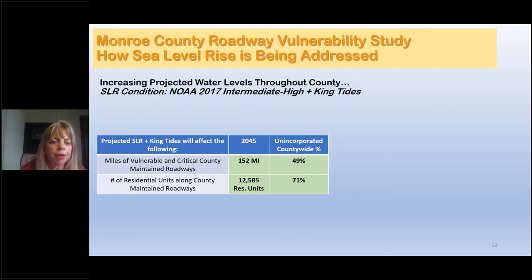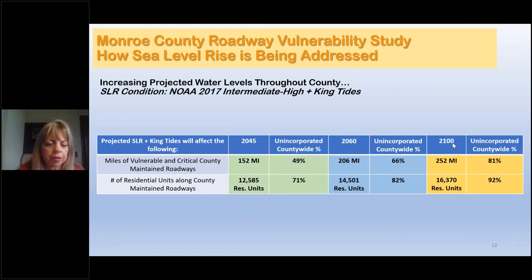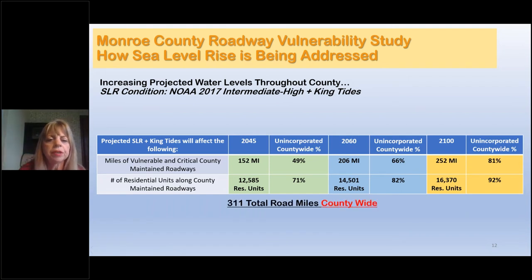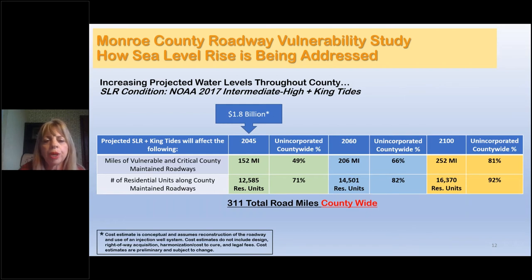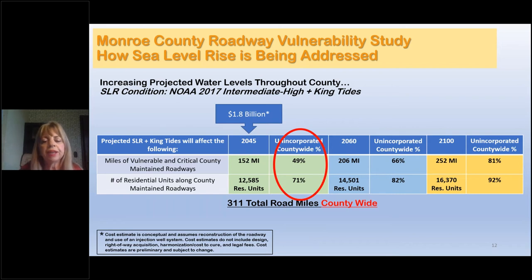We have 300 miles of county roadways. The study has already shown that 152 miles — basically half — are going to be subject to sea level rise in the next 25 years by 2045. By 2060, 66% of our roadways will be affected. To get us just to the year 2045, we're looking at approximately $1.8 to $2 billion to elevate that half of the roads subject to inundation. That 49% of the roadways actually encompasses 71% of the residential units — that's how planning got involved, because we said we can't just look at roadways, we have to look at people too.